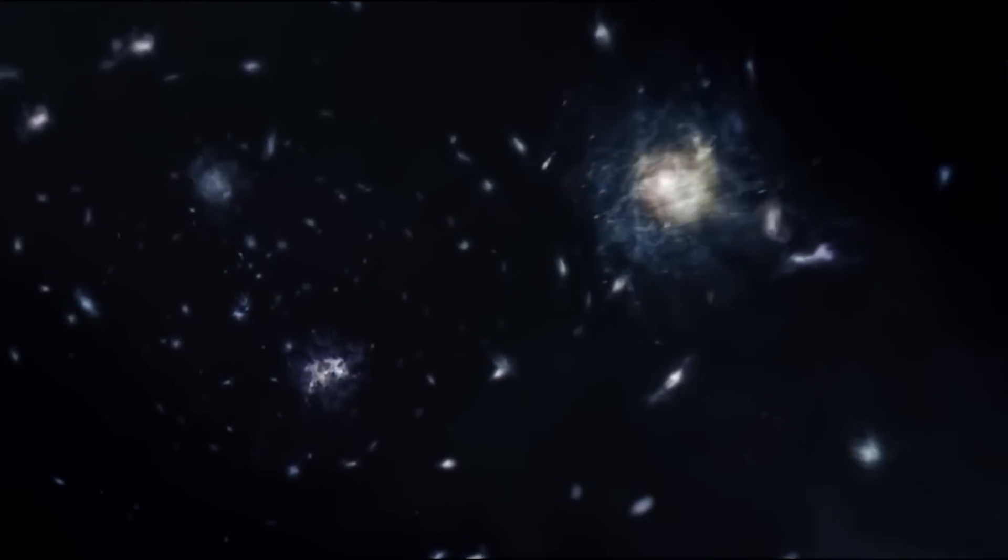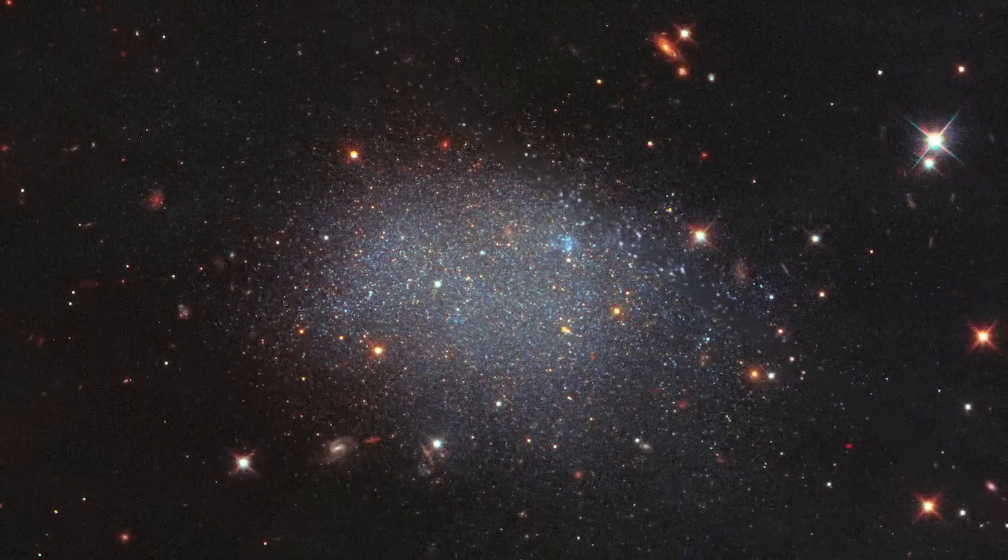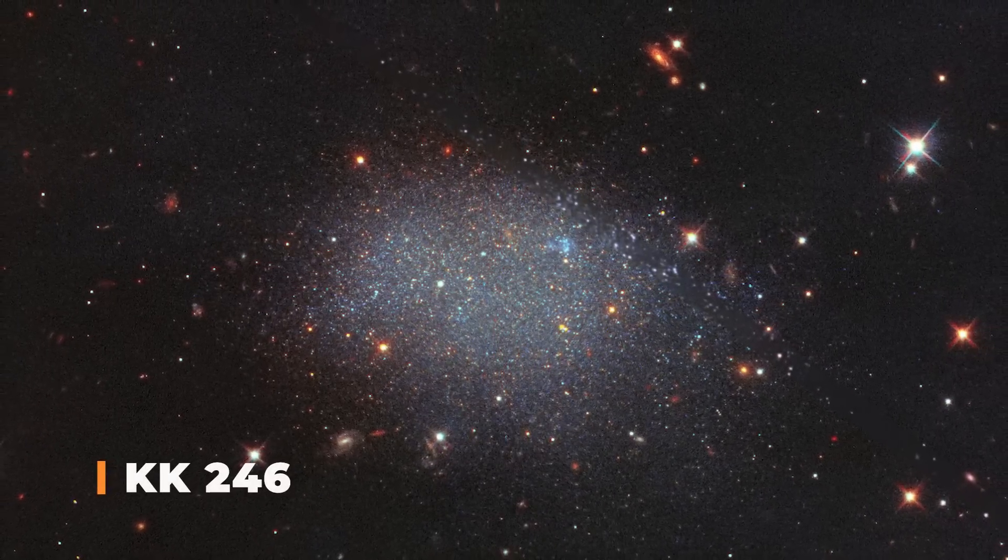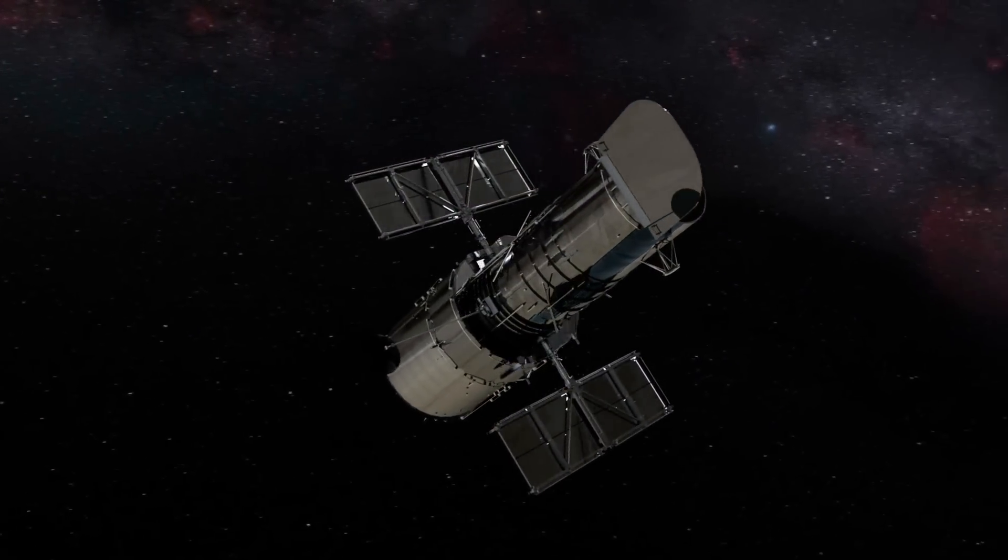There are feeble galaxies in these voids, and in the case of LV, there is one confirmed dwarf galaxy, KK246, that astronomers can study with the Hubble telescope.